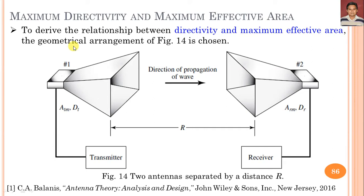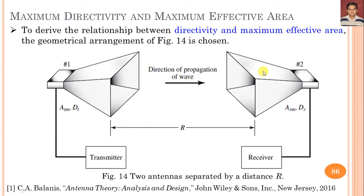First, we need to calculate the relation between the maximum directivity and maximum effective area. The effective area was discussed in lecture 5 and the directivity in lecture 4 of this series. To derive the relation, we consider two antenna systems — a directional horn antenna used as antenna 1 (transmitting) and antenna 2 (receiving), separated by a distance R.